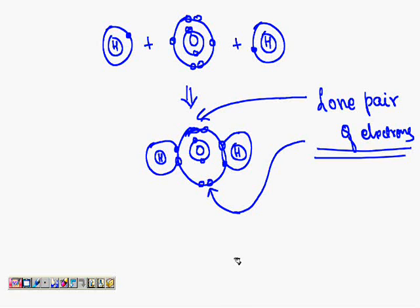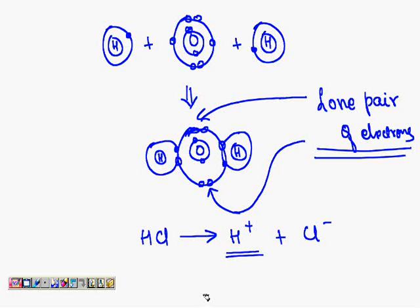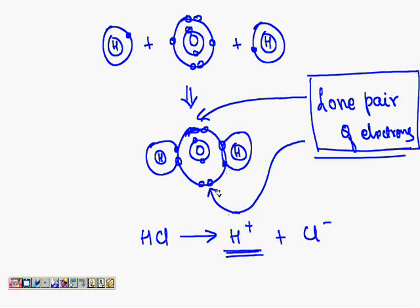Whenever a hydrogen ion is present — for example when an acid is dissolved — take HCl: hydrochloric acid produces H plus and Cl minus. This H plus is a positive ion, and the lone pair of electrons carries negative charge, so there is a force of attraction between them. These both combine together.